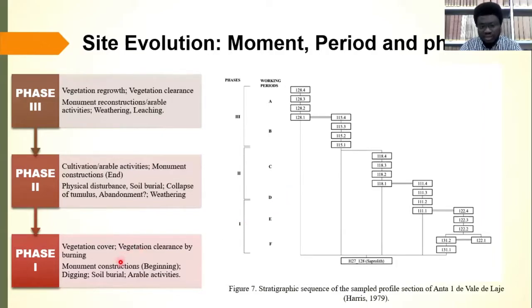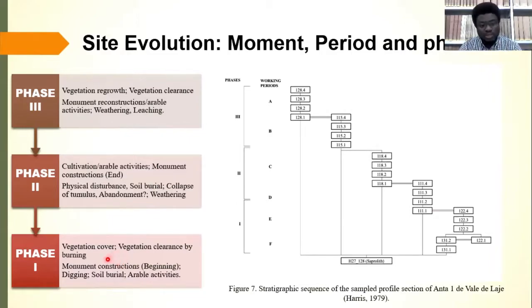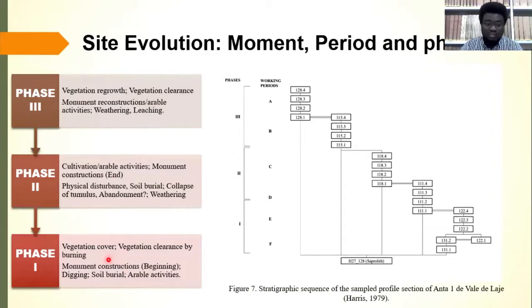In Phase 1, the activities we were able to recognize included vegetation cover — this was the initial occupation of the site — and this necessitated clearance. Based on the features recognized, it was characterized by vegetation clearance by burning. In this phase, there was also the beginning of monument construction, digging, soil burial, and arable cultivation activities.